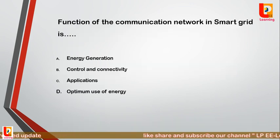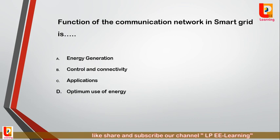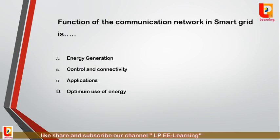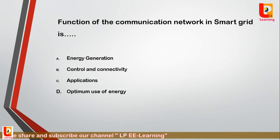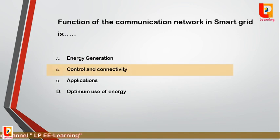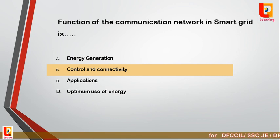Question 6: The function of the communication network in a smart grid is — option A: energy generation; option B: control and connectivity; option C: application; option D: optimum use of energy. Correct answer is option B: control and connectivity. The function of the communication network in the smart grid is to control and connectivity.